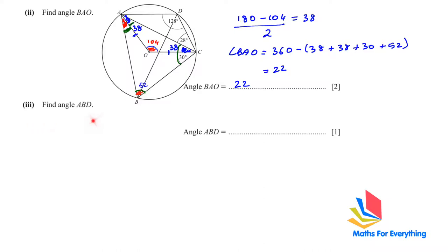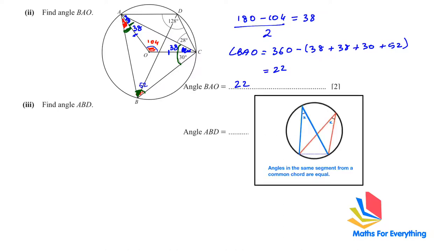Next, find angle ABD. Angles DCA and DBA originate from the same segment — they subtend the same chord DA. By the rule that angles in the same segment from a common chord are equal, angle ABD = angle DCA = 28 degrees.